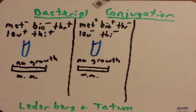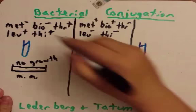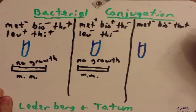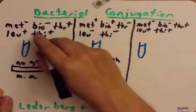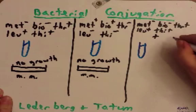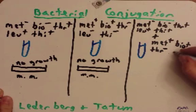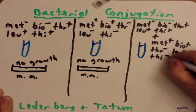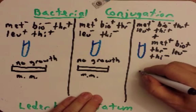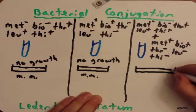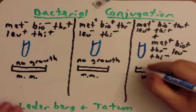So this was nothing new; they had known this for a long time. However, what they did next was, in the same culture tube, they put a bacterium that was Met-minus, Biotin-minus, Threonine-plus, Leucine-plus, and Thiamine-plus, together with a strain that was Methionine-plus, Biotin-plus, Threonine-minus, Leucine-minus, and Thiamine-minus. They grew that to a high density of cells and plated it on minimal media. What they found were colonies — not a ton of colonies, but certainly several colonies that grew.